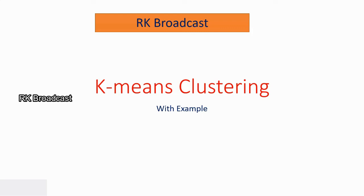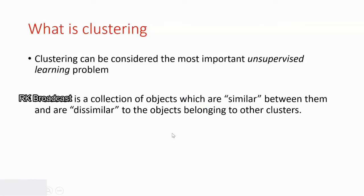Welcome to RK broadcast. I would like to explain the K-means clustering algorithm with an example in this video. K-means is a simple clustering algorithm and it falls under the partition clustering group. Before seeing the example, let us understand the meaning of clustering. Clustering is an unsupervised learning procedure, meaning we don't know the exact class labels or have complete knowledge about the data. A cluster is a group of similar objects.